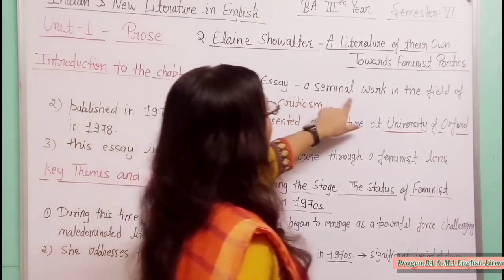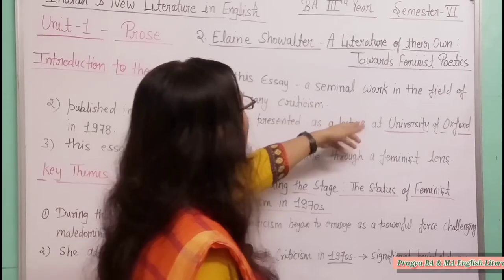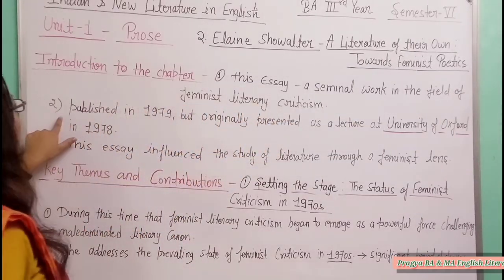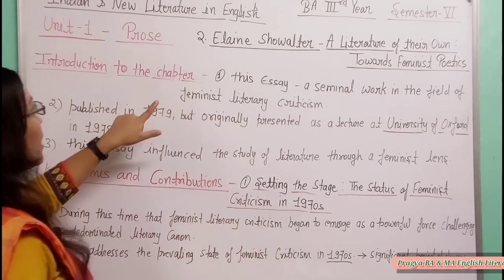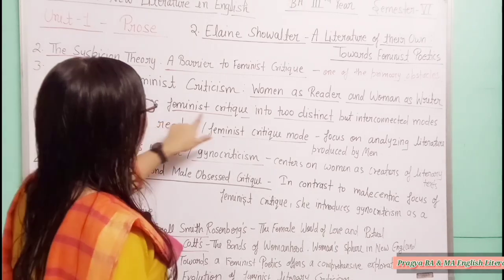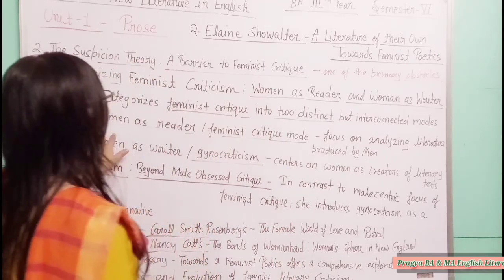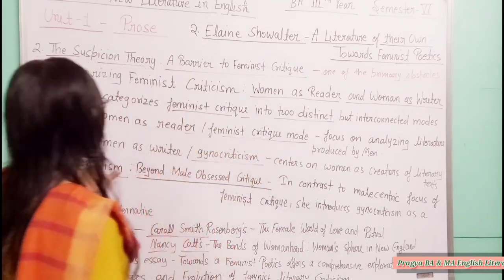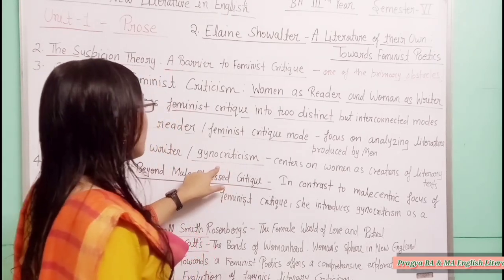In this essay, a seminal work in the field of feminist literary criticism, Elaine Showalter categorizes feminist criticism into two distinct but interconnected modes. First is women as reader, also called the feminist critic mode, and second is women as writer, associated with gynocriticism — a term coined by Elaine Showalter.